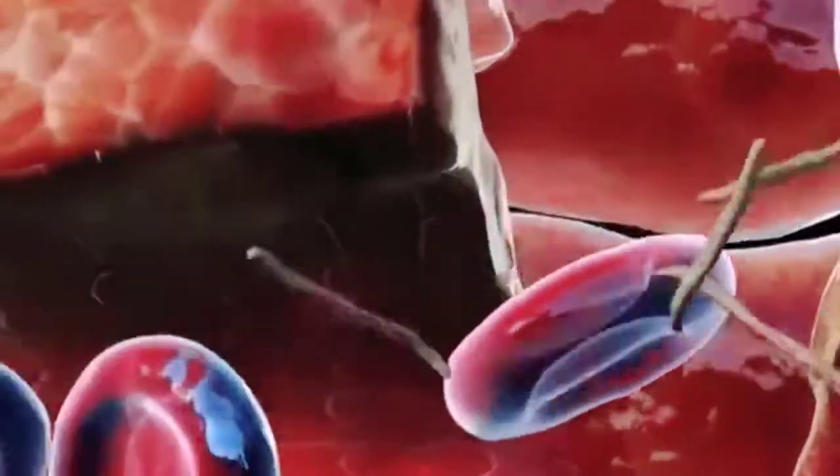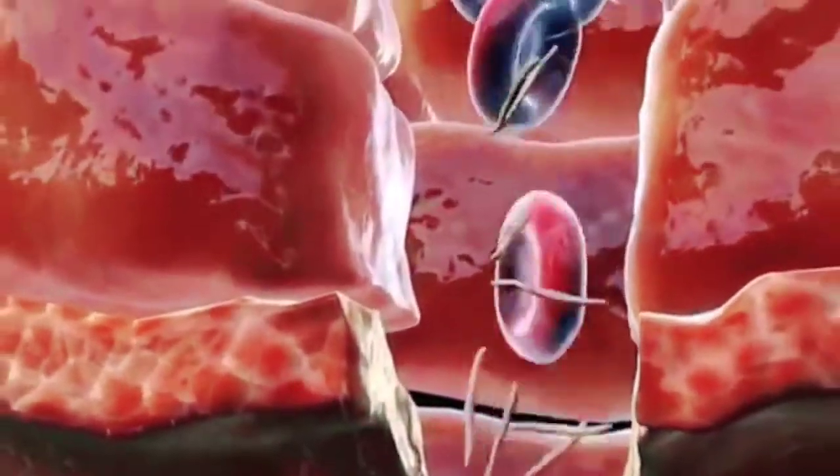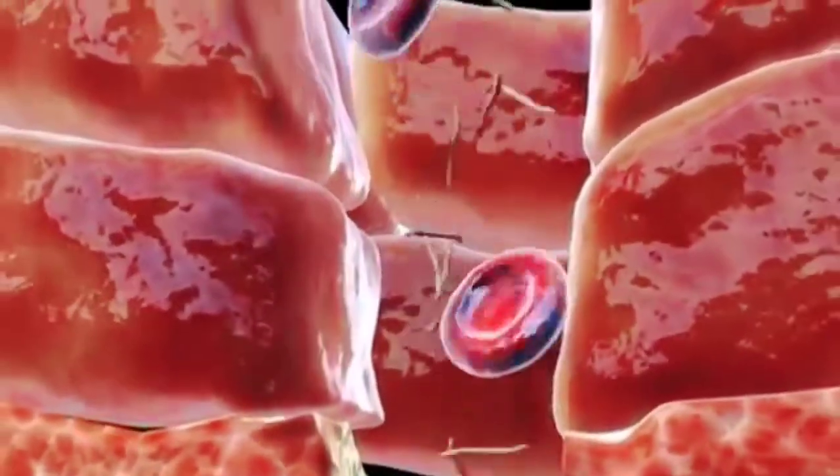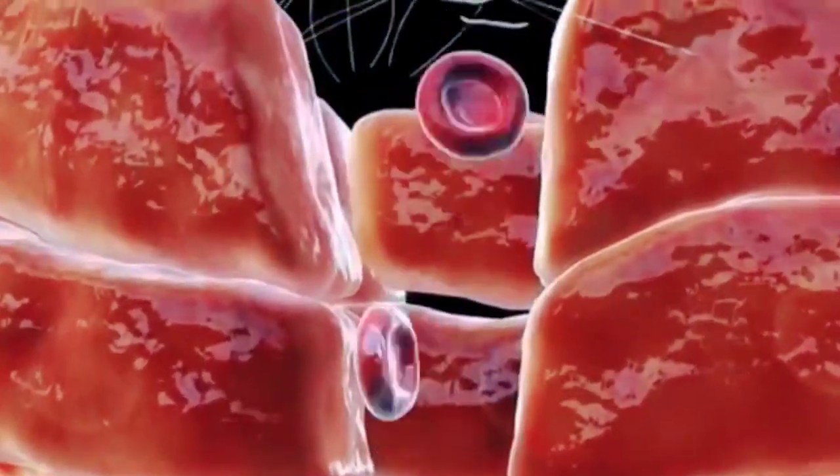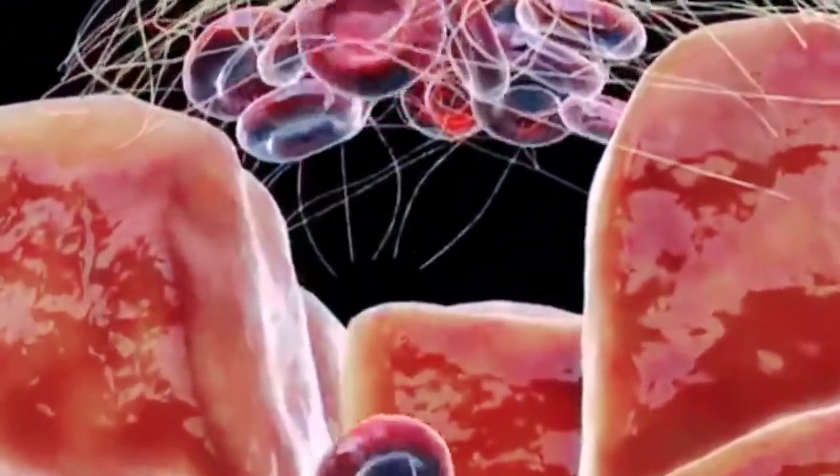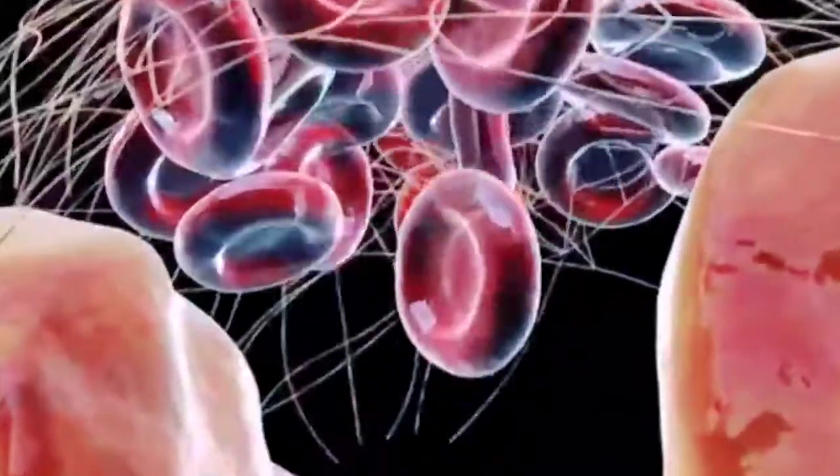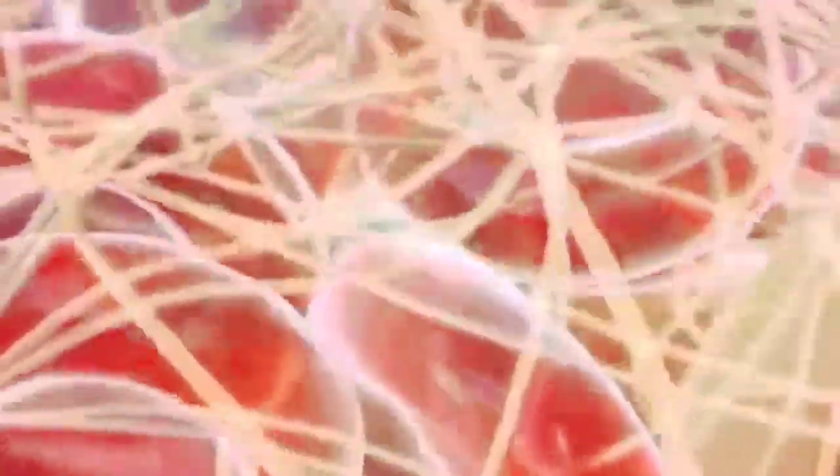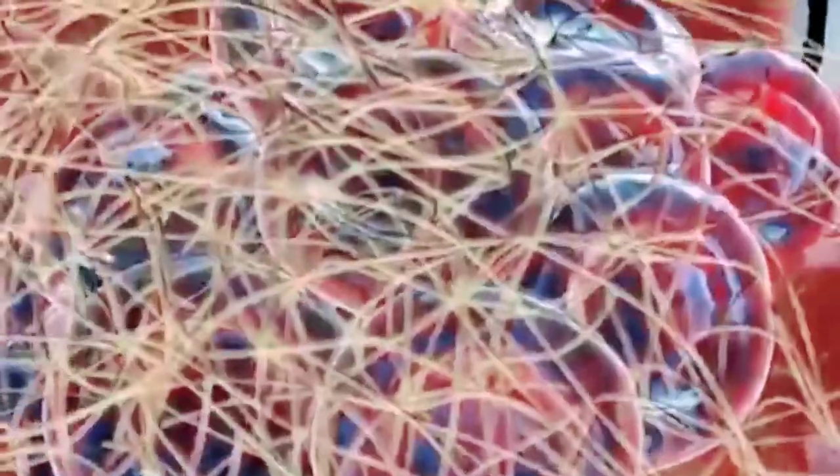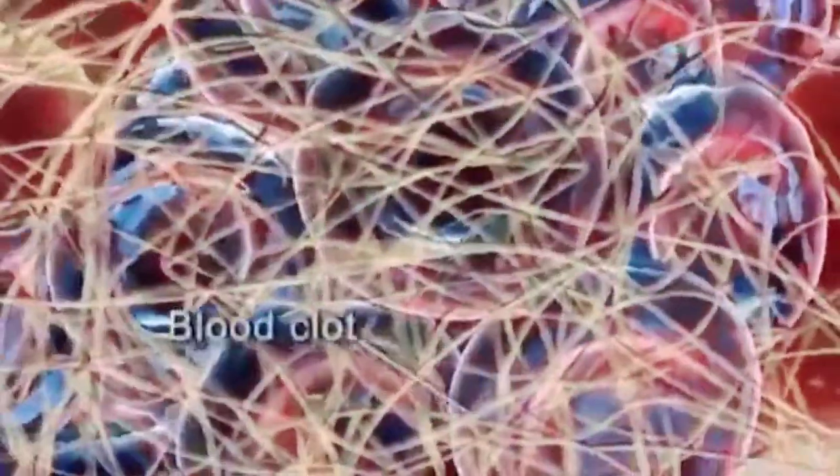These fibrin travel towards the damaged area. Here, this thread-like fibrin forms a mesh. The RBCs get caught and remain entangled. These RBCs and fibrin threads together form the blood clot.